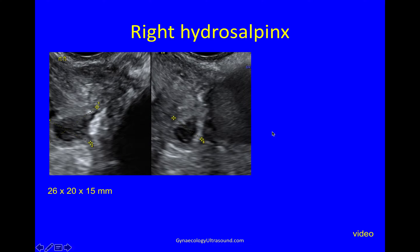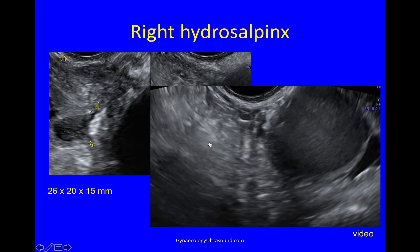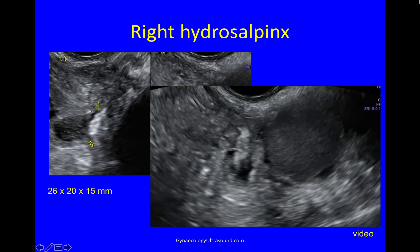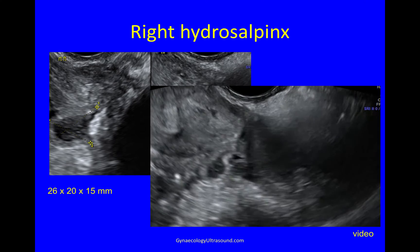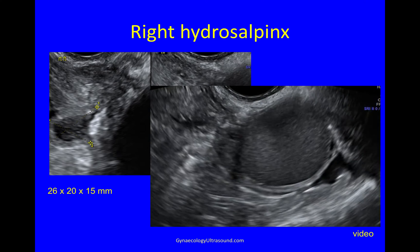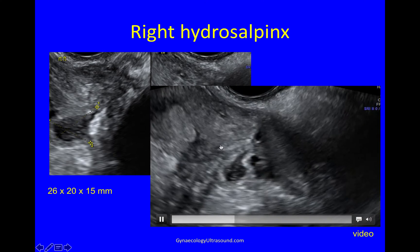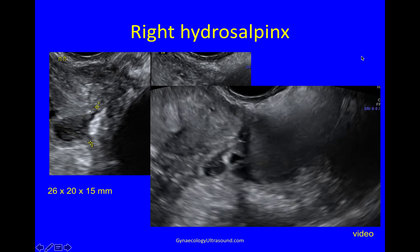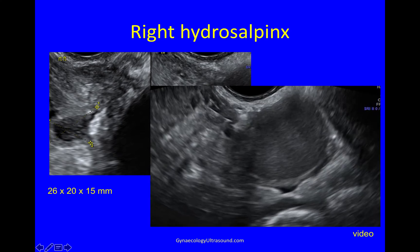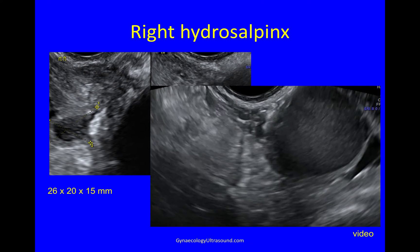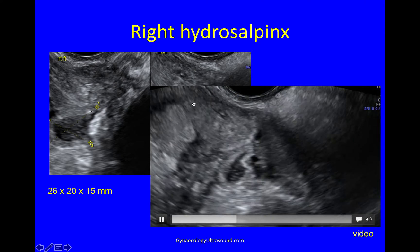Looking between the uterus and the ovary — there's the edge of uterus, there's the ovary — you can see this is a hydrosalpinx and I've measured it in two planes: the longest length plane, the longitudinal plane, and then the width. This is a small hydrosalpinx and this is what it looked like on video. So I'm breaking this whole pelvis up into small chunks, otherwise it's too much to take in. There's the endometrioma, there's the hydrosalpinx and there's the uterus with luteal phase endometrium.